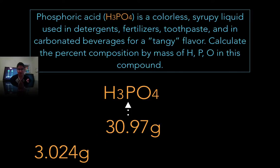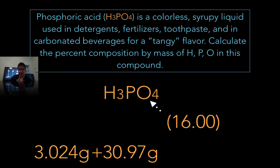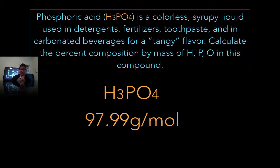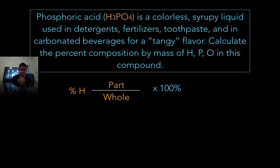And then phosphorus, I only have one phosphorus, so all I have to do is go to the periodic table and look up the molar mass for phosphorus and it's 30.97. And oxygen, I have four of them, so I need to multiply it by four and that's 64 grams. So now I have the mass of each of the elements. I add them all together and I get 97.99 grams per mole. So phosphoric acid has a molar mass of basically 98 grams per mole, and that's going to be my whole. That's going to be the number that I have for each one of these problems.